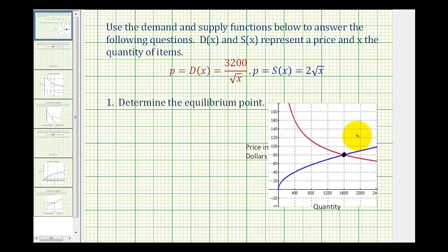To do this, we set the demand and supply functions equal to each other and then solve for x. Solving for x will give us the x coordinate or the quantity of the equilibrium point, and then we'll have to substitute that value into either the demand or supply function to determine the price per unit. So we'll start by setting the demand function equal to the supply function.